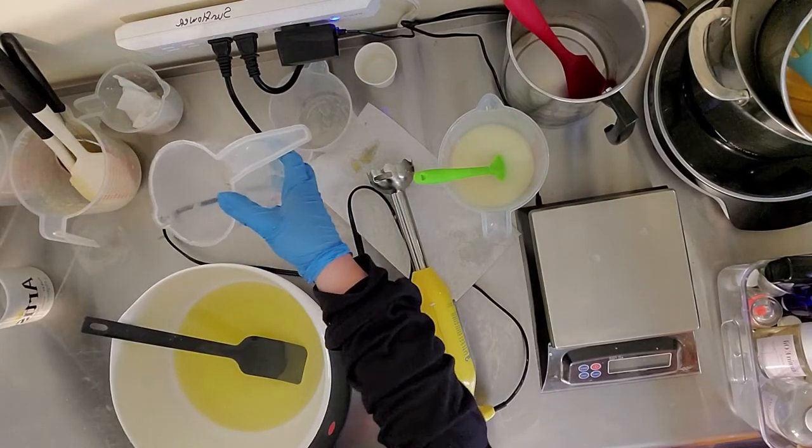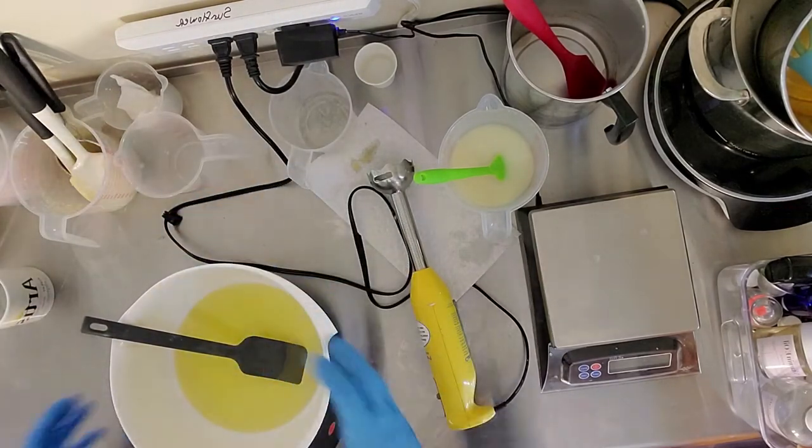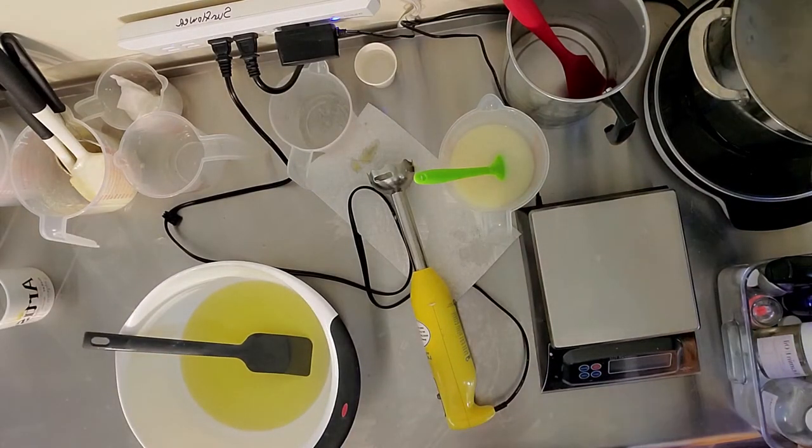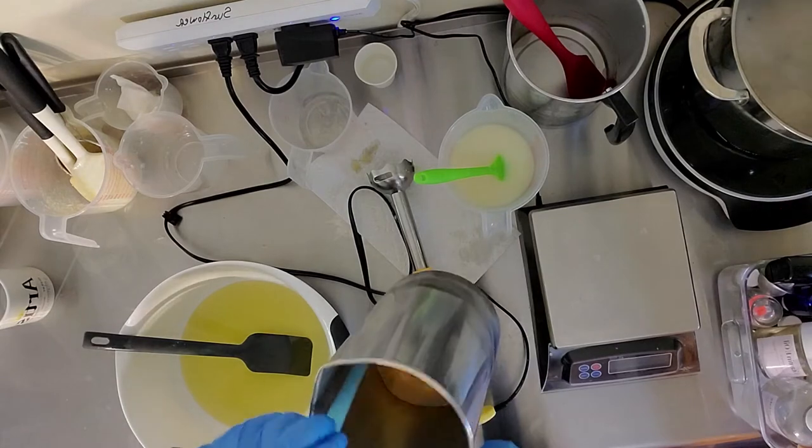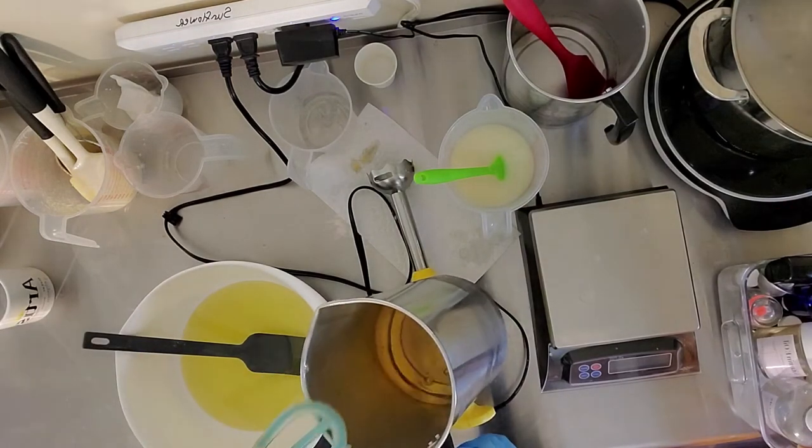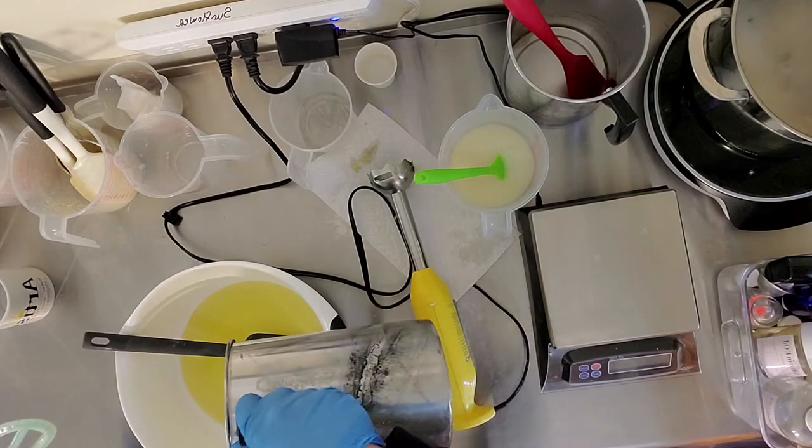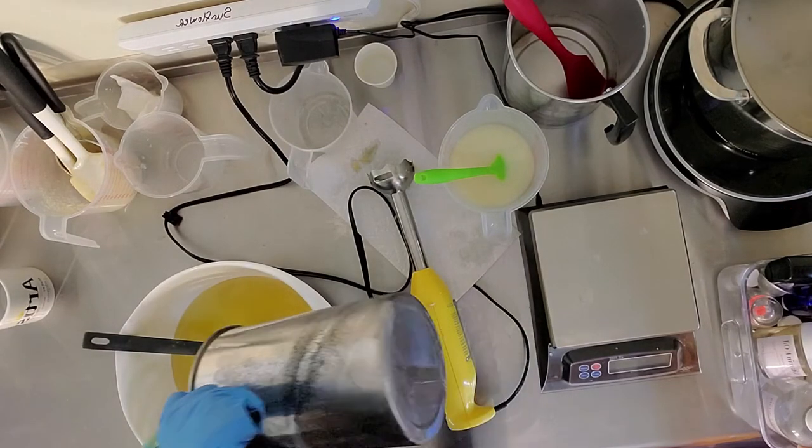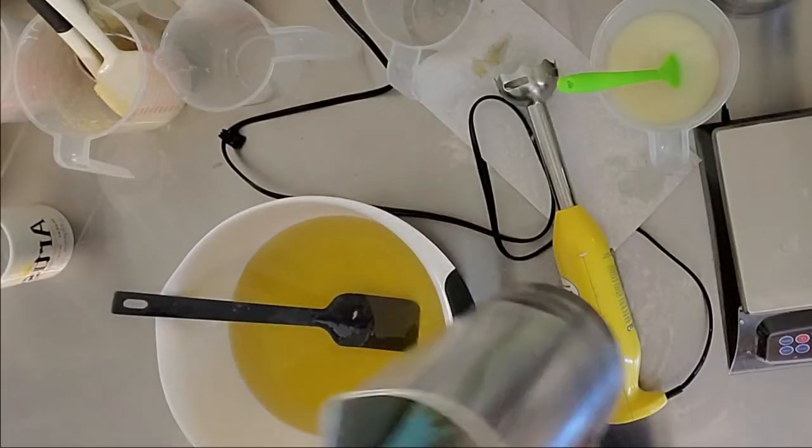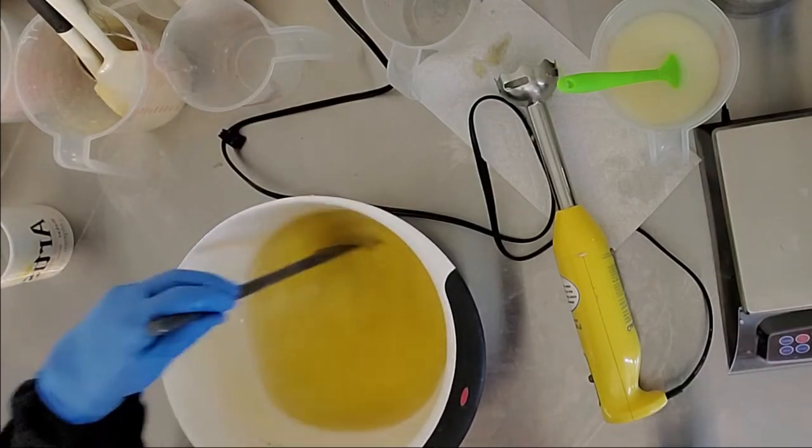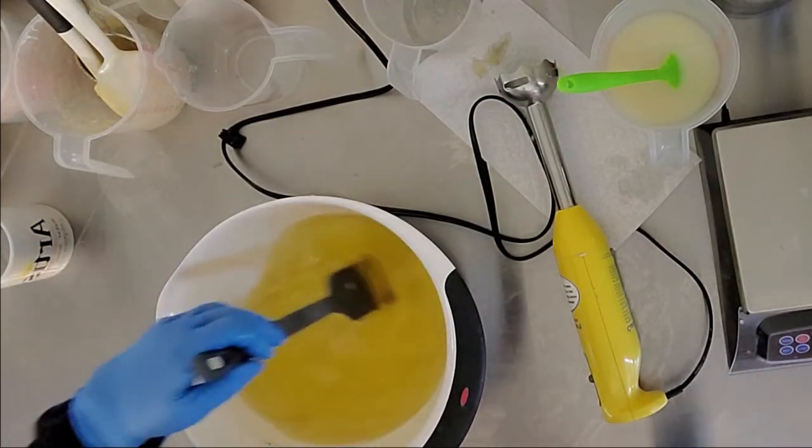I just added the room temperature liquid oils to the bowl and then I'm going to add the double boiler warmed oils like canola oil, palm oil, beeswax. Those are all hard oils, they need to be melted down. I use a double boiler method, it's my preference. You can also use a microwave in 30 second bursts to melt it to where you need it to be.